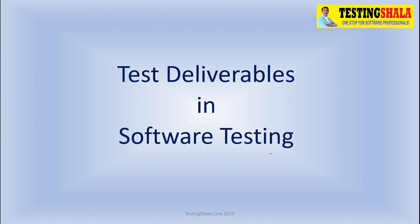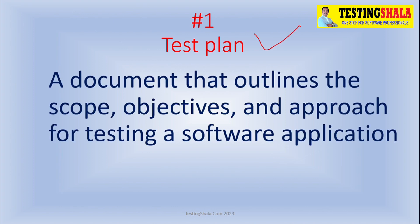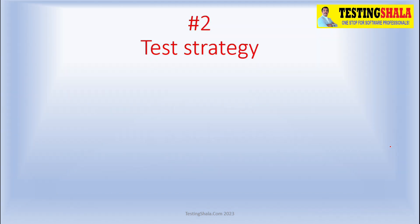The first one is a test plan. The test plan is a document that gives an outline of the overall test scope, objectives, and various approaches being adopted for doing software testing for a given application. All those details will be defined in the test plan — that is the first key deliverable in software testing.